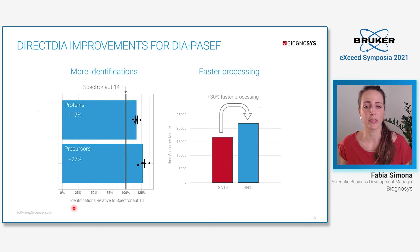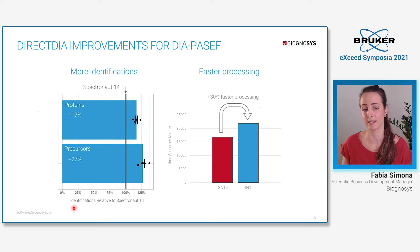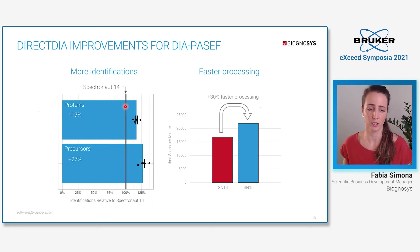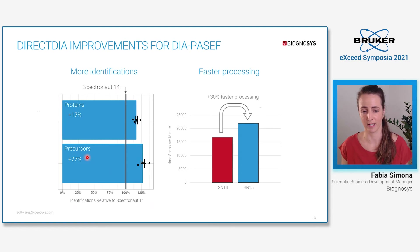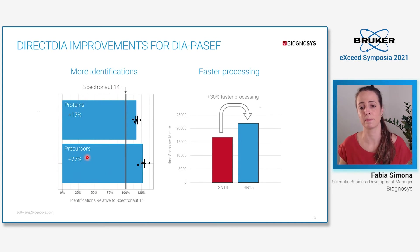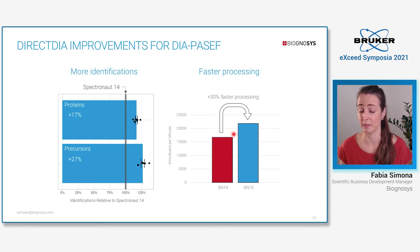Spectronaut 15 comes with major performance improvements both at the identifications level as well as speed. Compared to Spectronaut 14, both at the precursor and protein level, we can see a substantial increase in identifications — on average, an increase of 27% at the precursor level and 17% at the protein level. More identifications do not sacrifice speed; actually, Spectronaut 15 is comparably faster than Spectronaut 14 in the processing of TIMS scans.